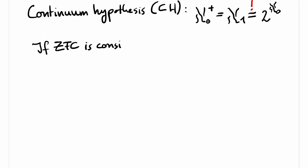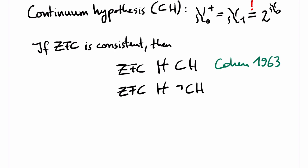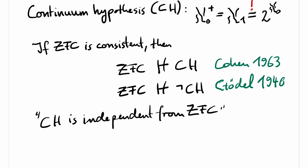The continuum hypothesis states that the cardinal successor of aleph 0, which is aleph 1, equals 2 to the aleph 0. Phrased differently, the hypothesis states that every set which is not countable has already at least the size of the power set of omega. It is known that if ZFC is consistent, then the continuum hypothesis cannot be proved in ZFC. Cohen showed how to produce from a model of ZFC another model of ZFC where the continuum hypothesis does not hold. Moreover, the negation of the continuum hypothesis cannot be proved in ZFC either. Already before, Gödel showed how to construct from a model of ZFC a model of ZFC where the continuum hypothesis holds. In other words, the continuum hypothesis is independent from ZFC. The same holds for the stronger generalized continuum hypothesis, which is the analogous statement for all cardinals kappa.